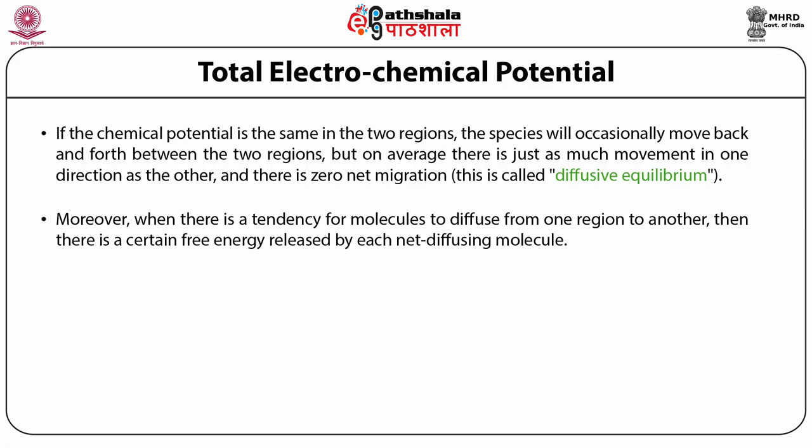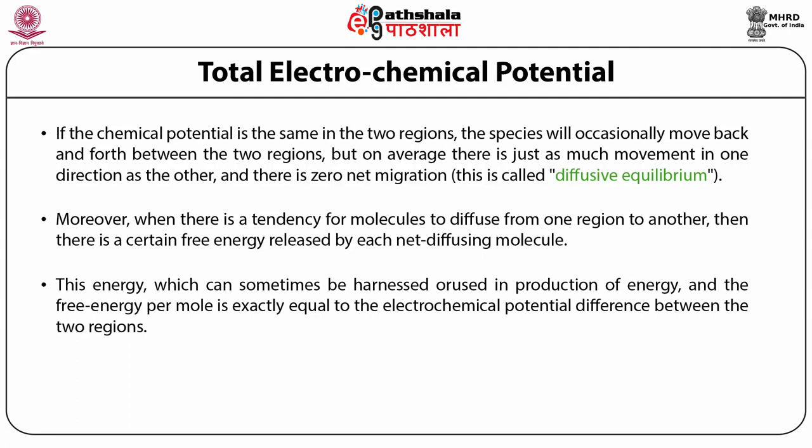There is zero net migration or diffusion equilibrium — diffusion equilibrium only occurs when chemical potential of both regions is the same. Moreover, when there is a tendency of a molecule to diffuse from one region to another, there is a certain free energy released by each net diffusing molecule. This energy can sometimes be responsible for production of energy, and the free energy per mole is exactly equal to the electrochemical potential difference between two regions.